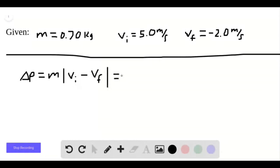The mass is just 0.70 kilograms, right? And then V initial is 5 meters per second. V final is minus 2 meters per second. So V initial minus V final is 7 meters per second.